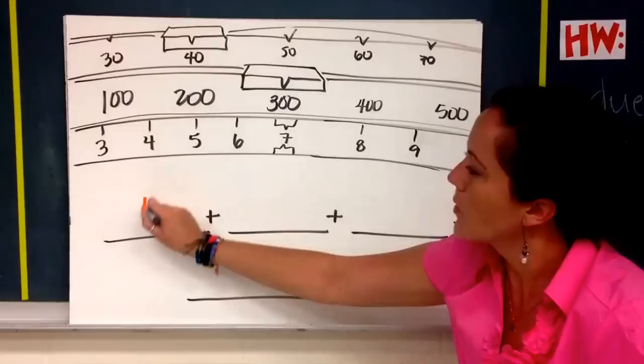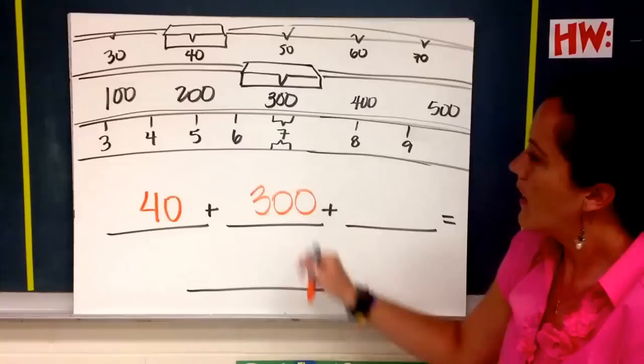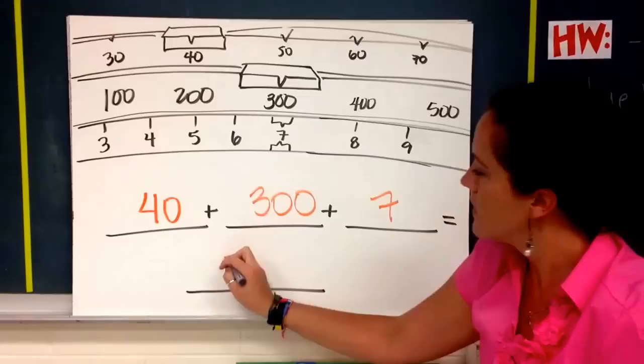Our first number is 40. Our second number is 300. Our third number is 7. Then you just add up those three numbers.